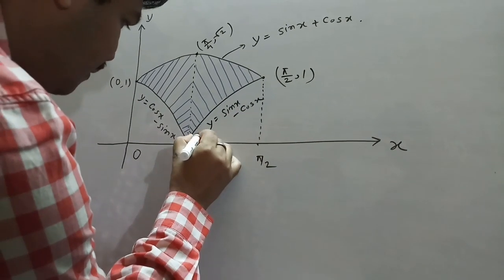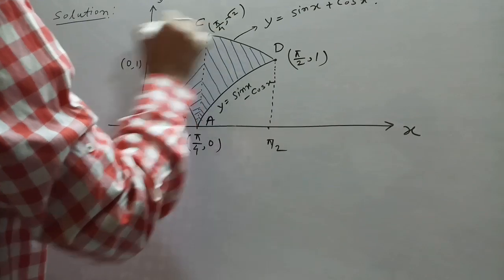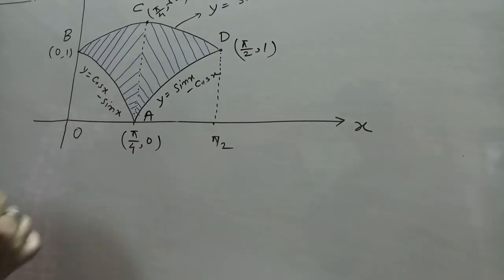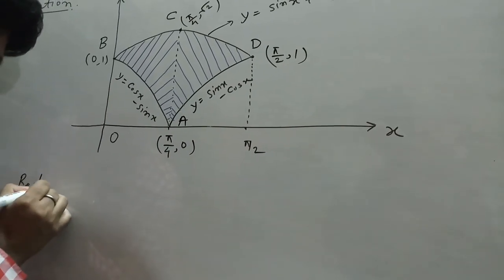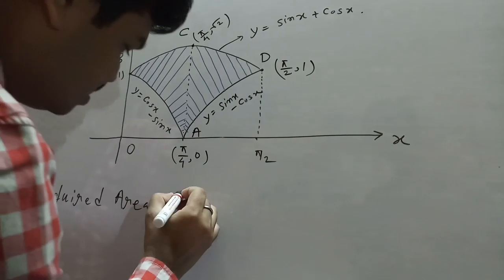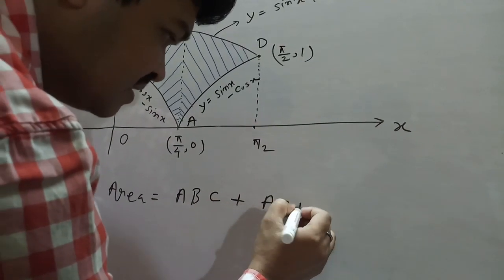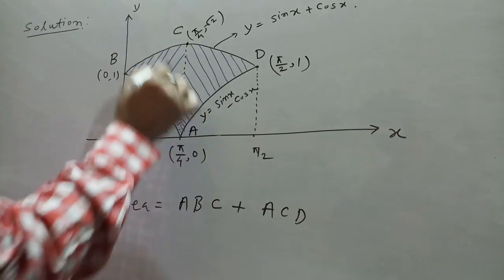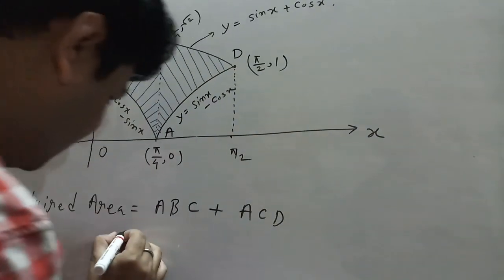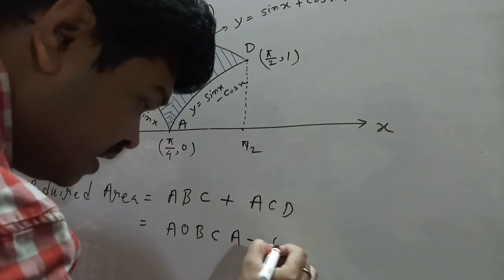Let this point be A, this point D, this point C, this point B, and this point E. The required area equals area(ABC) + area(ACD). Area ABC is divided as area(AOBC) minus area(OBA).